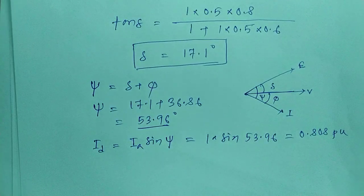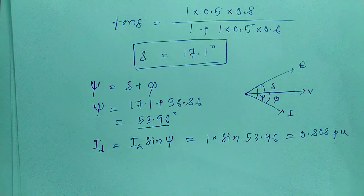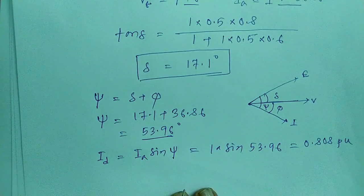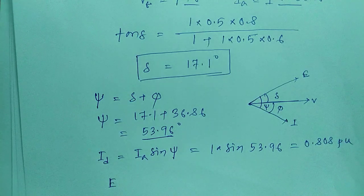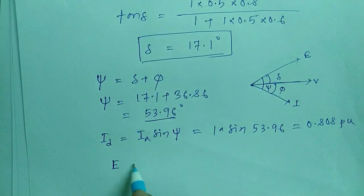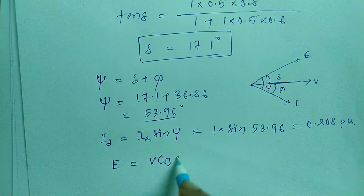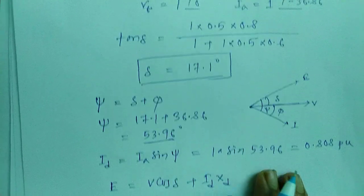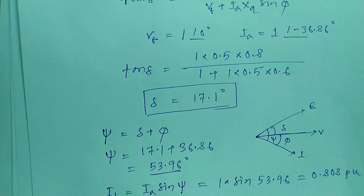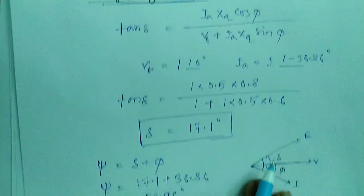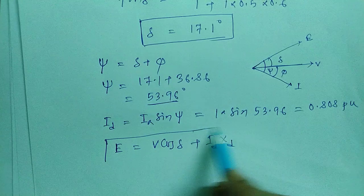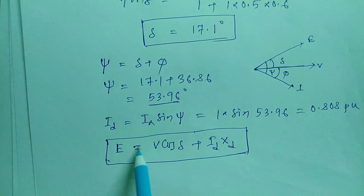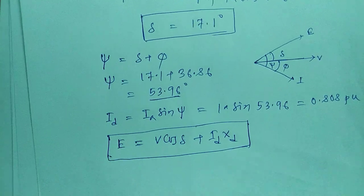Next, we have to calculate Id · Xd. We know that when an alternator is supplying a lagging load, the induced EMF or open circuit voltage E is: E = Vt · cos(δ) + Id · Xd. That is the reason we calculated the values of Id and delta — so that we can use this formula for the lagging load condition of the alternator.